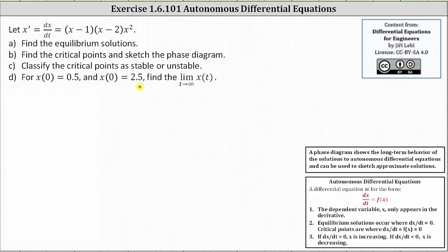For a quick review, an autonomous differential equation is in the form dx/dt equals f of x, meaning dx/dt is equal to a function of only the dependent variable x. Equilibrium solutions occur where dx/dt is equal to zero, and the critical points are the points on the x-axis where dx/dt, or f of x, is equal to zero.